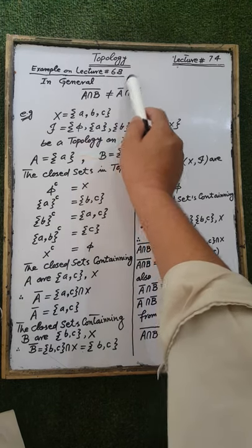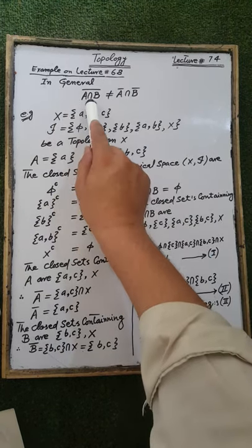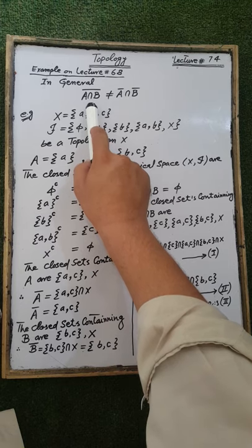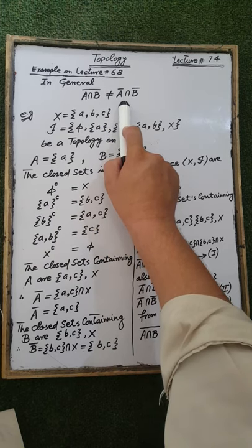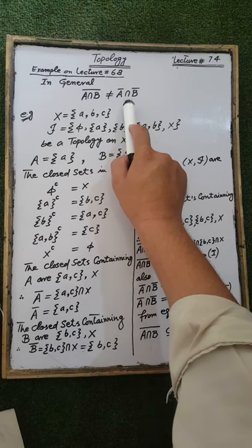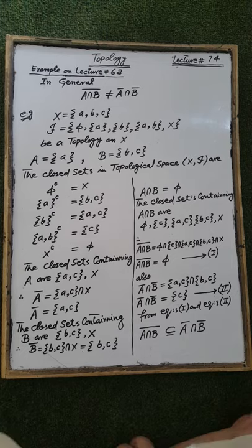Example and lecture number 68. In general, the closure of A intersection B is not equal to the closure of the set A intersection the closure of the set B. For example,